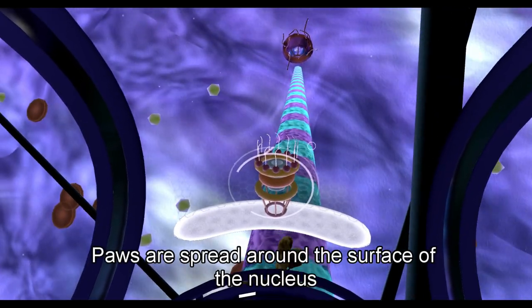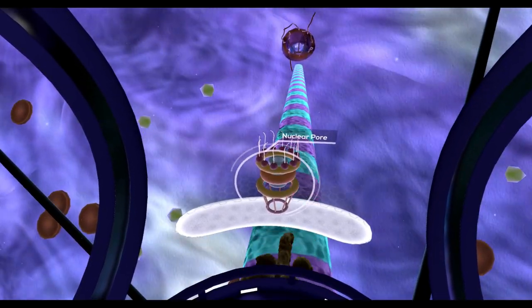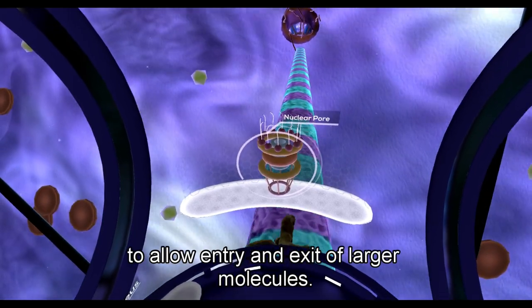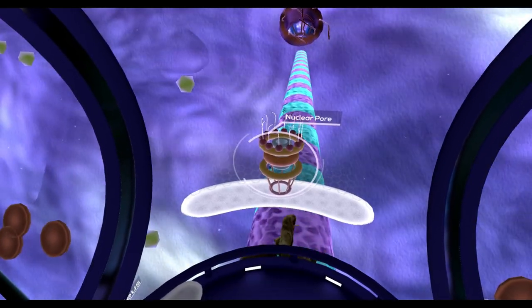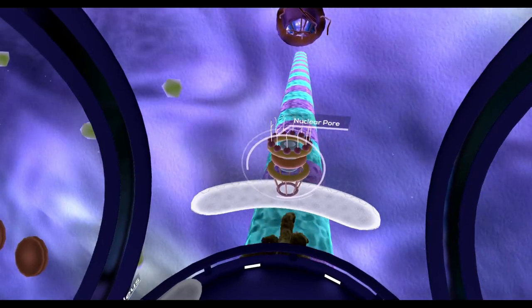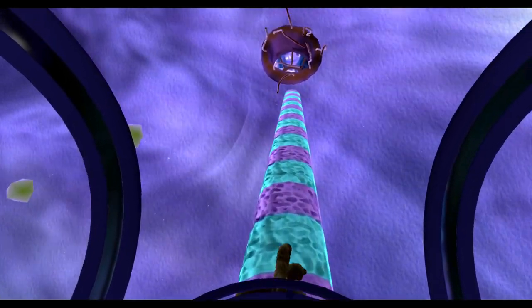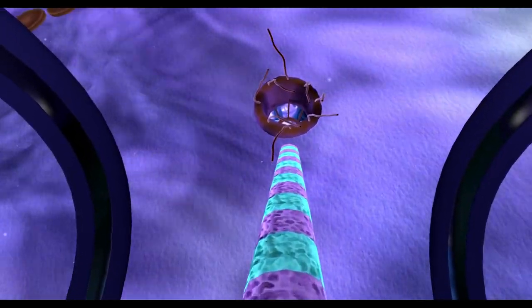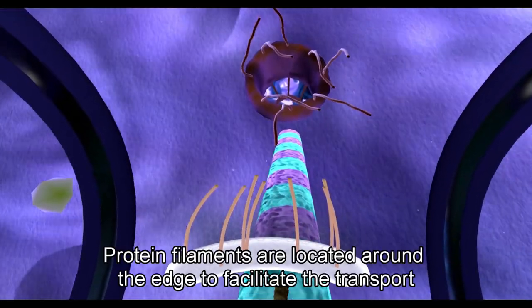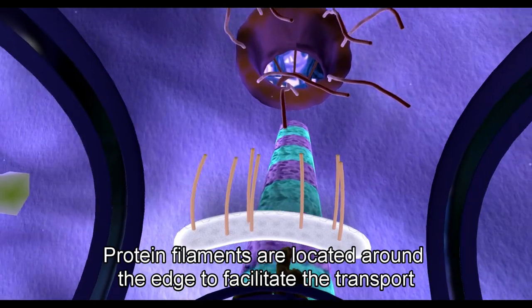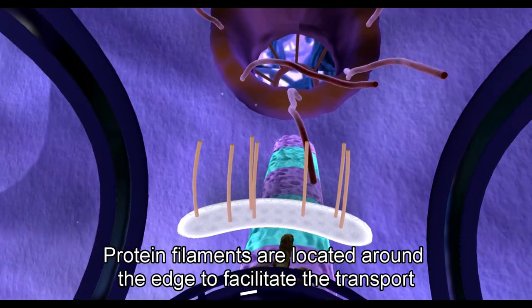Pores are spread around the surface of the nucleus to allow entry and exit of larger molecules. Protein filaments are located around the edge to facilitate the transport.